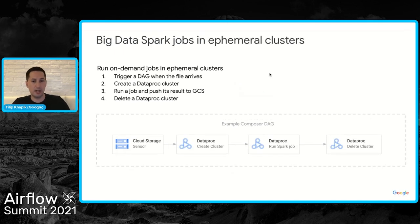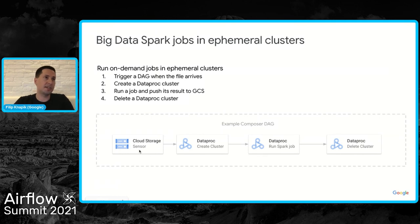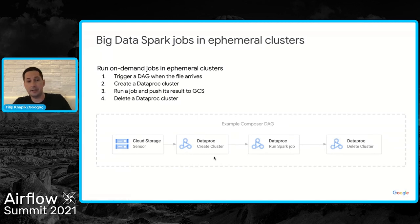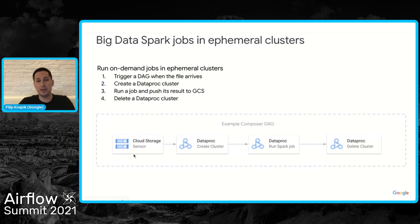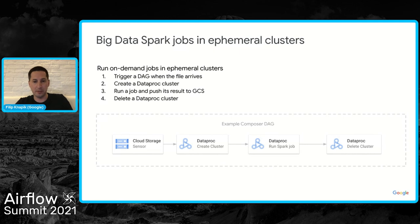Another case is running big data or Spark jobs. Imagine you want to run a job on a Dataproc cluster but don't want the cluster running all the time due to cost. As part of your DAG, you can sense whether a file is there in storage, create a cluster on demand, run the jobs, and then delete the cluster when no longer needed. This creates an ephemeral compute layer, and you gain full visibility into the entire chain — if any step fails, you have immediate access to what specifically happened.